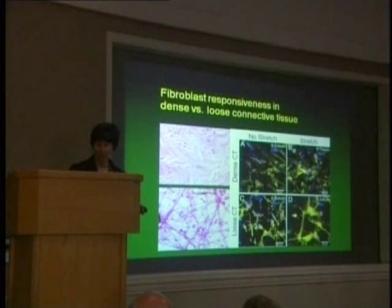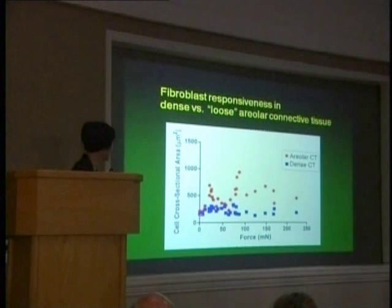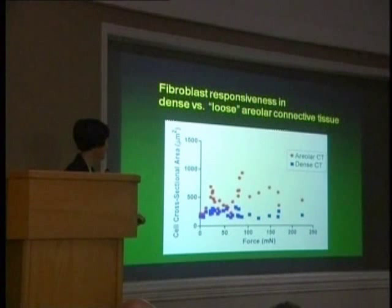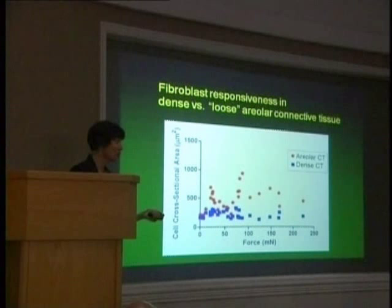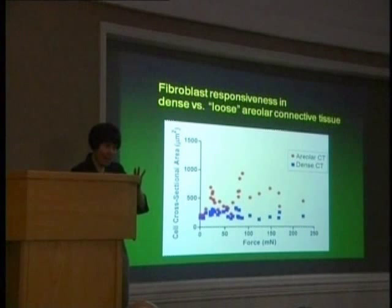We wondered for a while whether we just got the wrong force — maybe you need to use a different amount of force in the dense connective tissue. So one of my technicians spent a lot of time trying all kinds of different forces, from very low to very high. Blue is the dense, and you see nothing. Here's the cross-sectional area of the cells — in red, the cells are expanding in response to force in the areolar loose connective tissue. But in the dense connective tissue, she was never able to make them respond. So it looks like in the dense connective tissue, the matrix is probably too tight and it shields the cells from the force — it takes the load, so the cells don't feel the strain deformation enough to be able to respond.